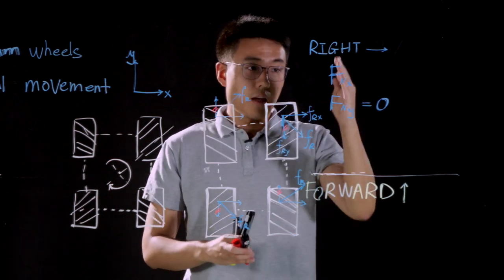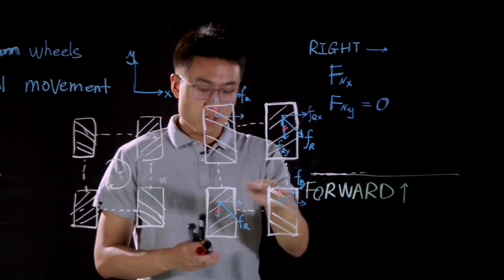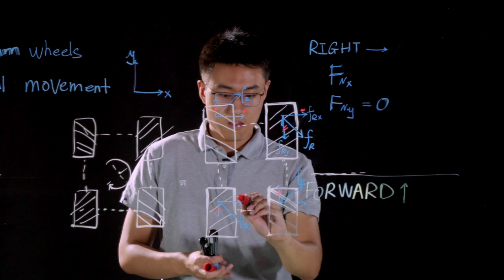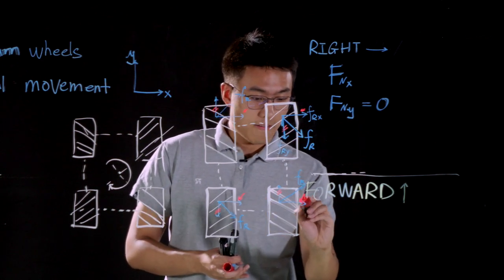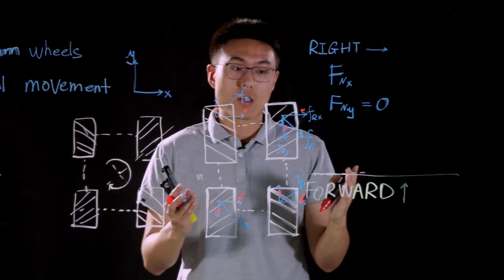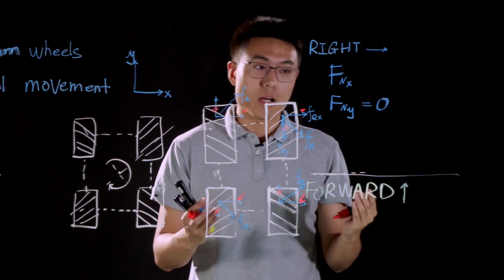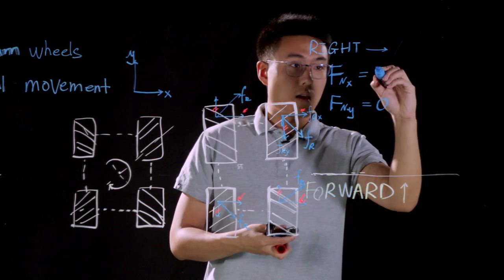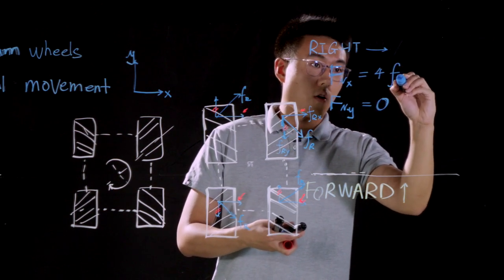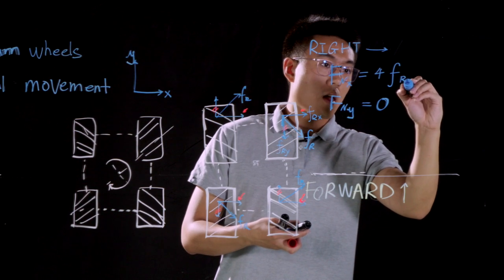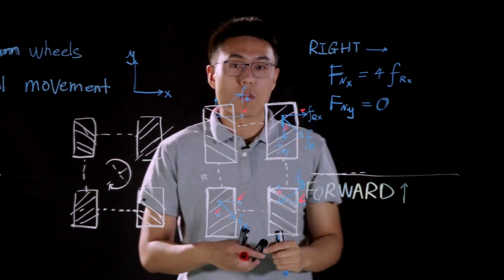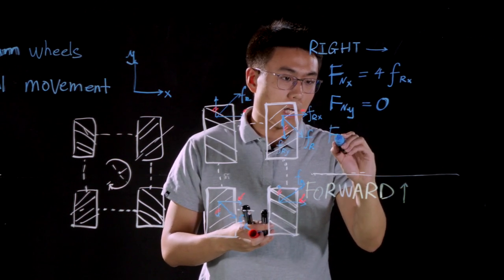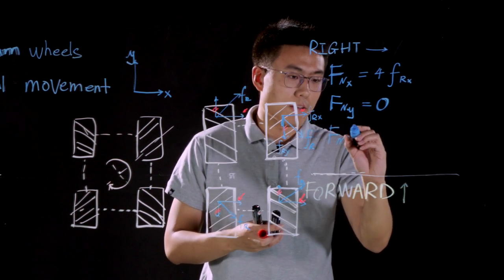And for net force on X axis, let me say that we have four component forces with same magnitude in same direction. That's why we have four FR,X as our net force on X axis.